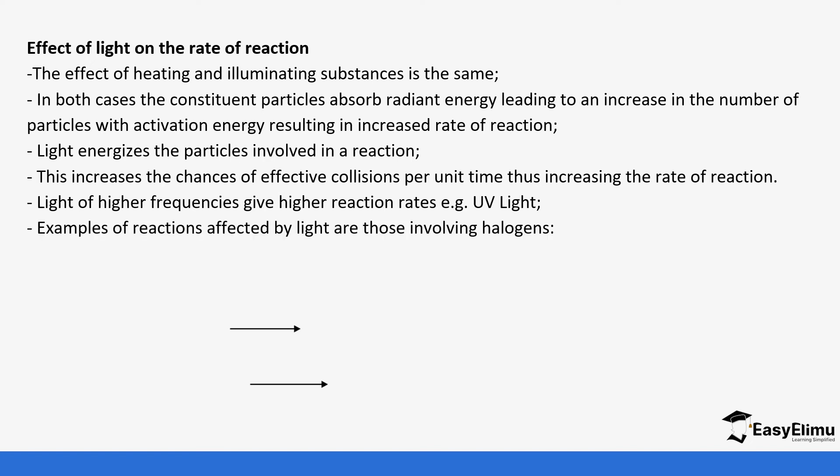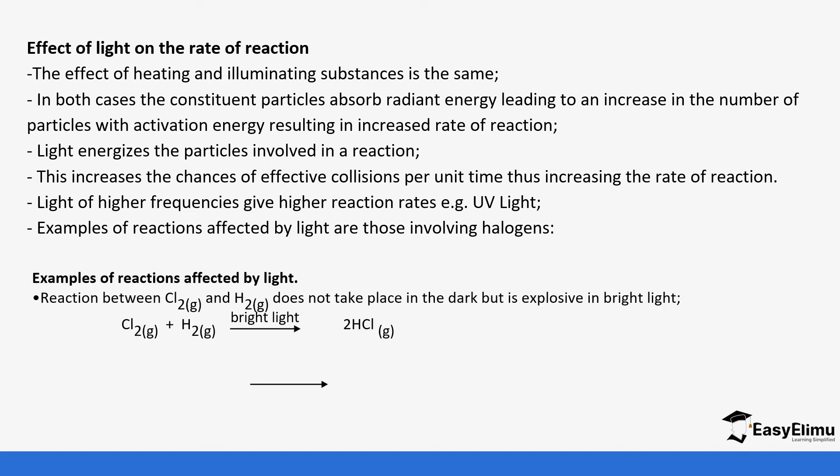Examples of reactions affected by light are those involving halogens. The reaction between chlorine and hydrogen doesn't usually happen in darkness. It happens when exposed to light, otherwise this reaction does not occur. When chlorine reacts with hydrogen in presence of UV it forms hydrochloric gas.